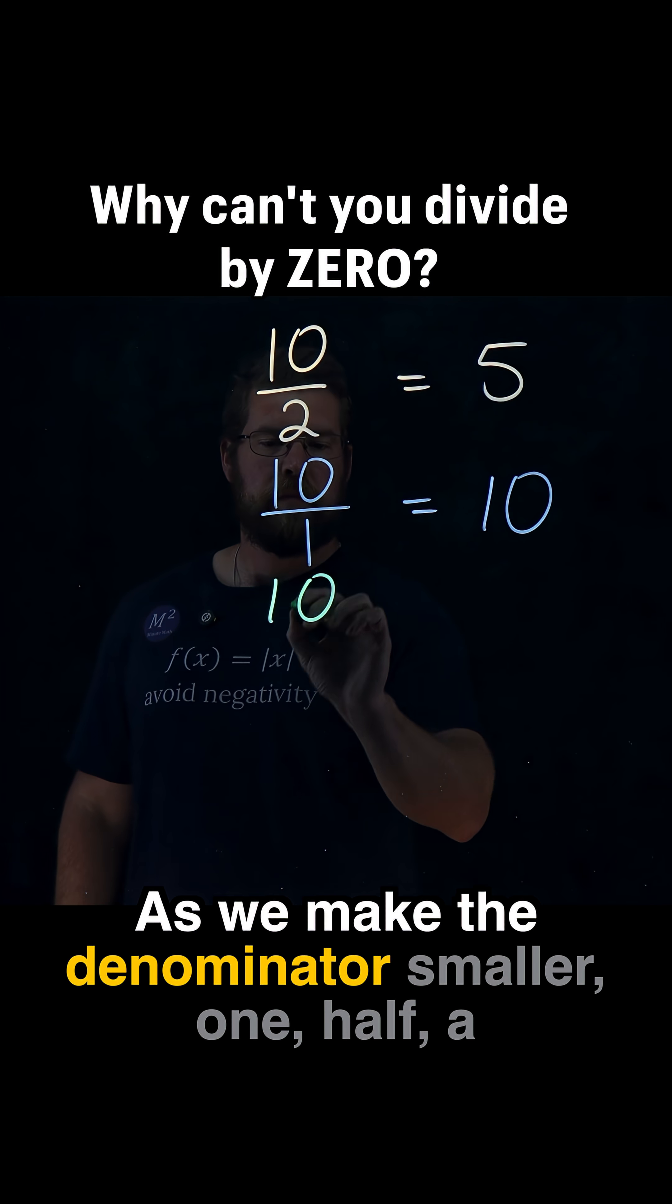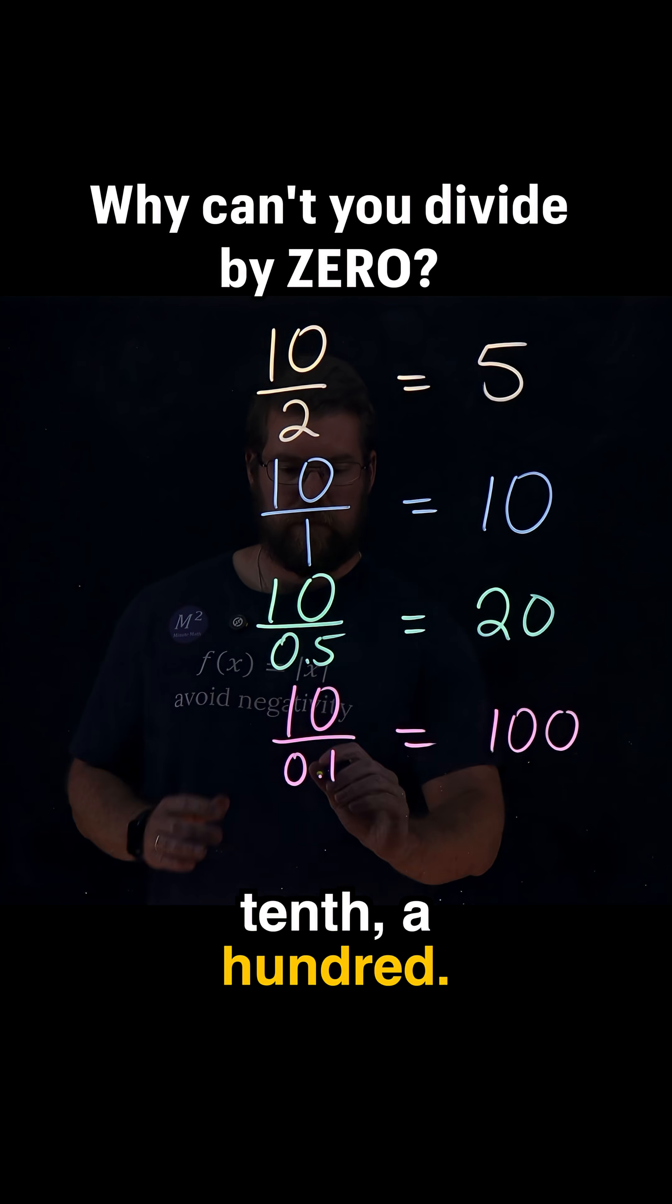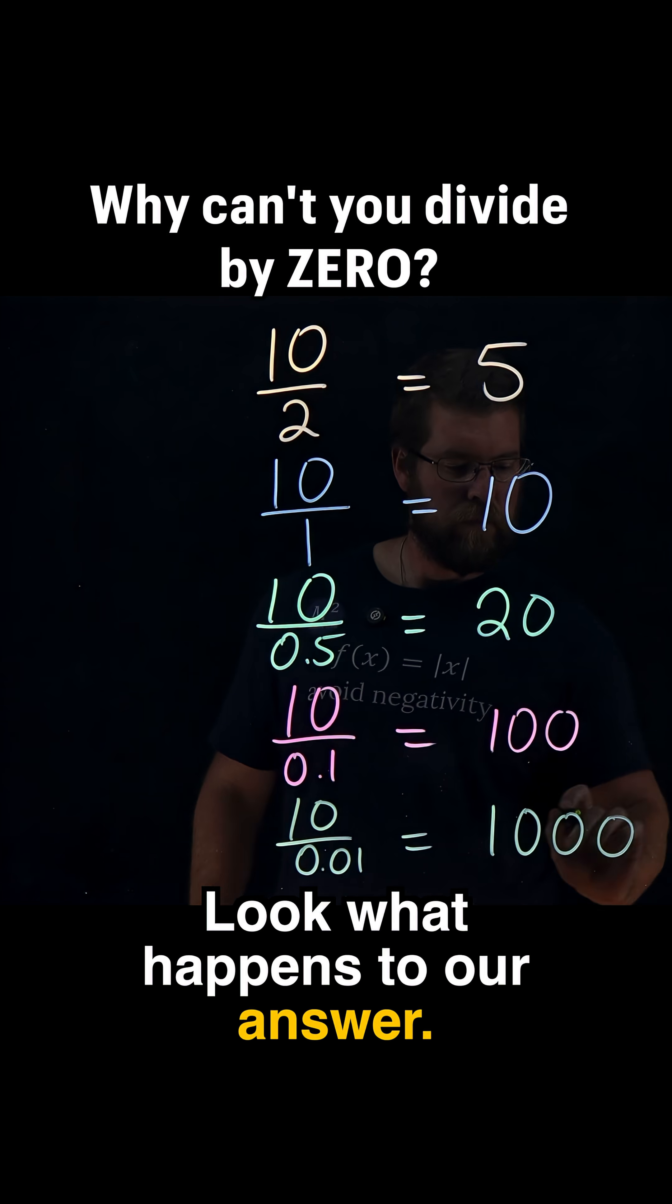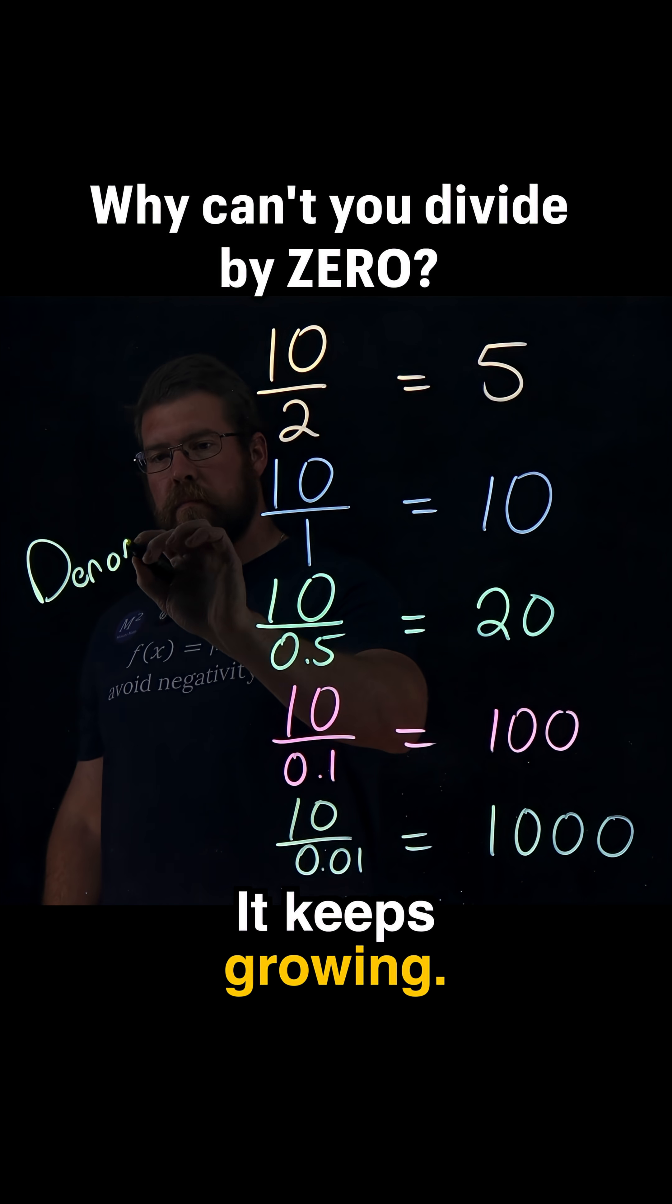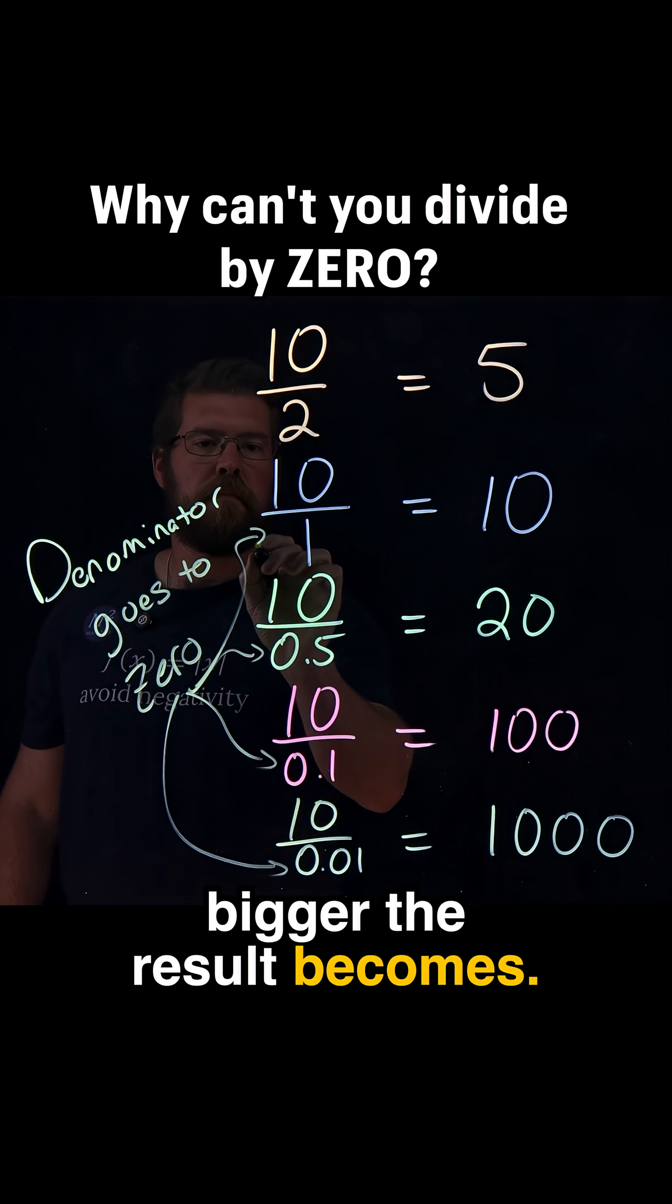As we make the denominator smaller - one, half, a tenth, a hundredth - look what happens to our answer. It keeps growing. The smaller the number we divide by, the bigger the result becomes.